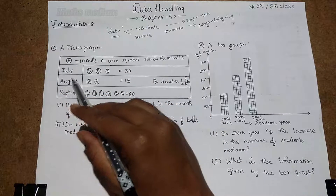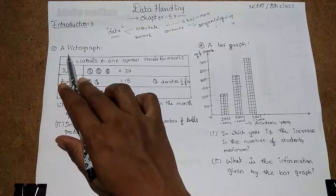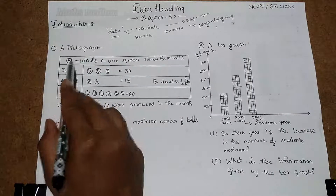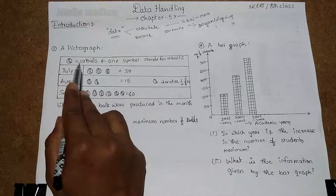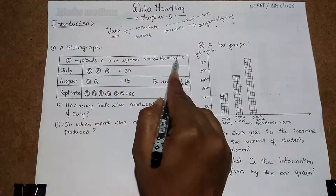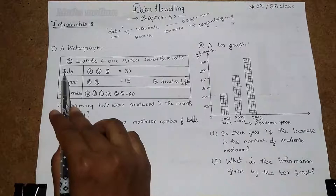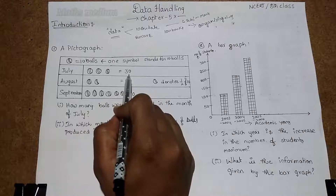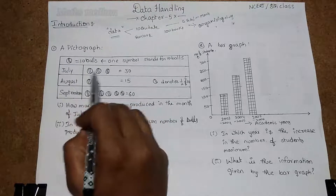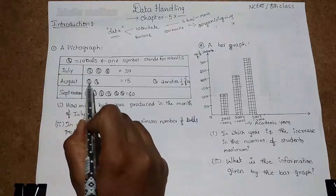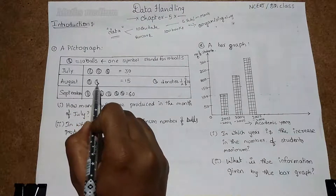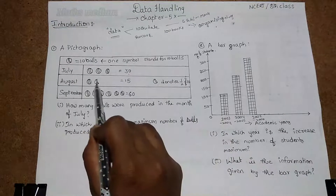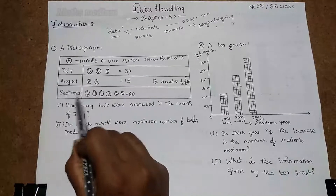A pictograph is the representation of data using symbols. Here, one ball symbol represents 10 balls. So in the month of July and August, if we have three balls completely, that is 30 — because each ball contains 10, so 10 plus 10 plus 10 equals 30. If we see a half ball, that denotes half of 10, which is 5. So 10 plus 5 equals 15.